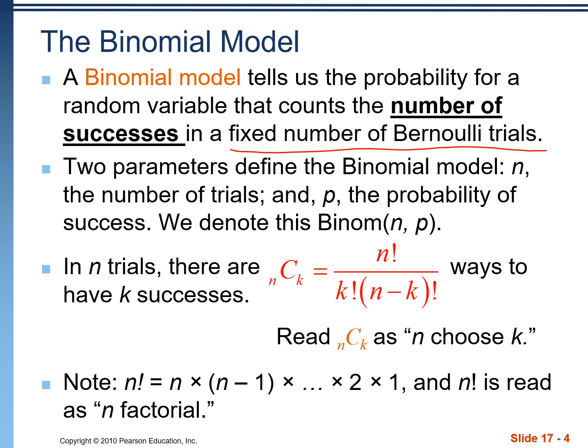There's two things we need to know, where with a geometric model, we only needed to know the probability of success. Along with that for binomial, is that we also need to know how many trials we're doing.